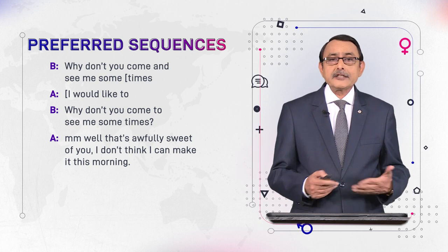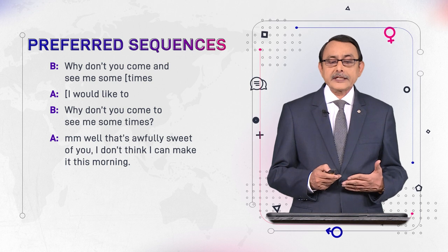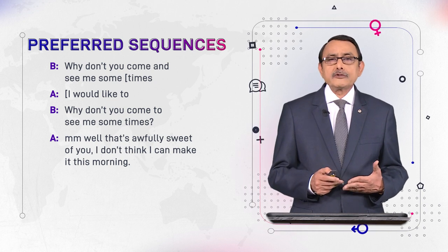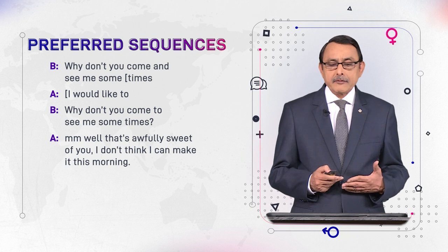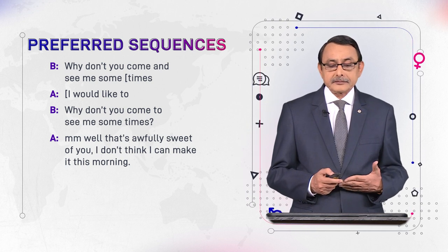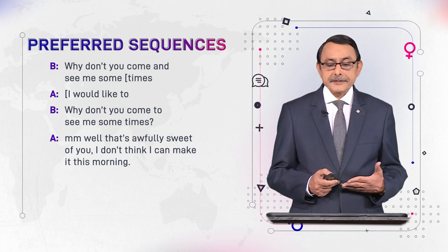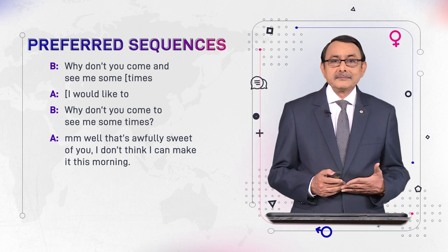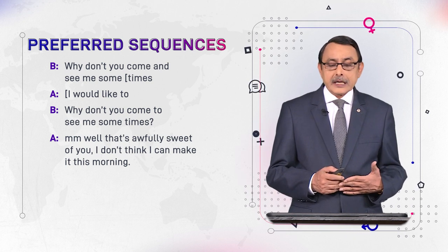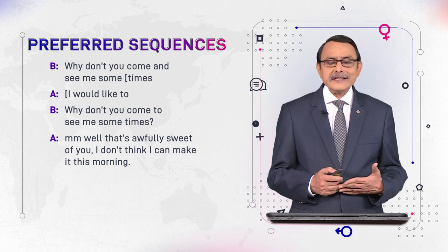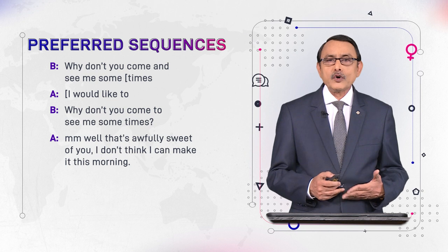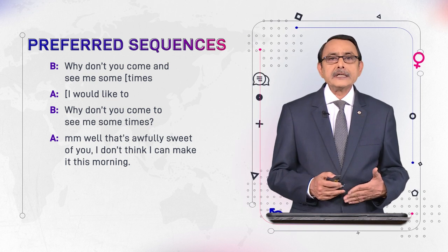Notice another difference: when the invitation was accepted, it was very direct — 'I would like to' — with no hesitations and no fillers. When there is a refusal, there are hesitations. You see fillers like 'mm', 'well' — these are introducers. Then 'that's awfully sweet of you' is added to show some politeness, followed by 'I don't think I can make it this morning.' This is a polite way of refusing the invitation.